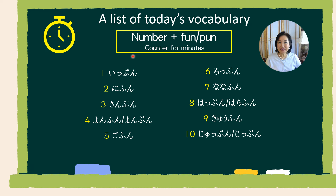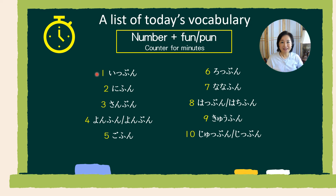How about for minute? The counter for minute is ふん or ぷん, and its pronunciation changes depending on the number that comes before it. So let's count from 1 minute to 10 minutes together. いきますよ — 1分、2分、3分、4分、5分、6分、7分、8分、9分、10分。